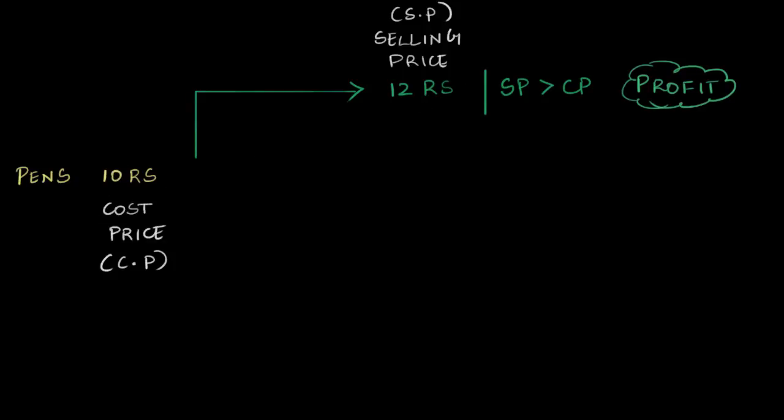How much is that profit? We calculate that by finding SP minus CP. In this case, that's 12 minus 10, which equals two rupees. That two rupees is called your profit.